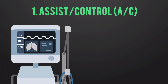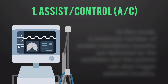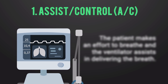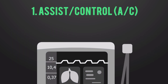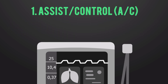In Assist Control mode, a minimum number of preset mandatory breaths are delivered by the ventilator, but the patient can also trigger assisted breaths — the patient makes an effort to breathe and the ventilator assists in delivering the breath. Just know that the breaths are not spontaneous in this mode; they can be patient-triggered, but they are still delivered by the ventilator.